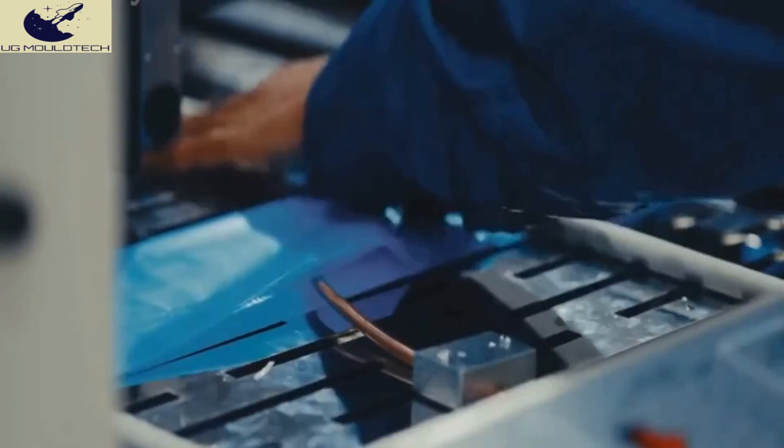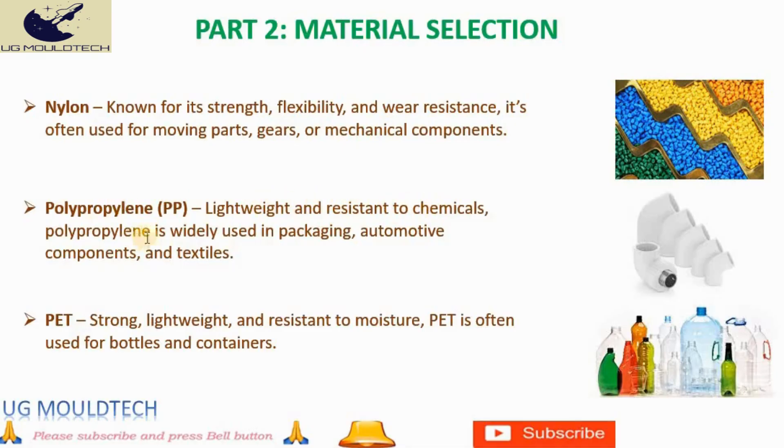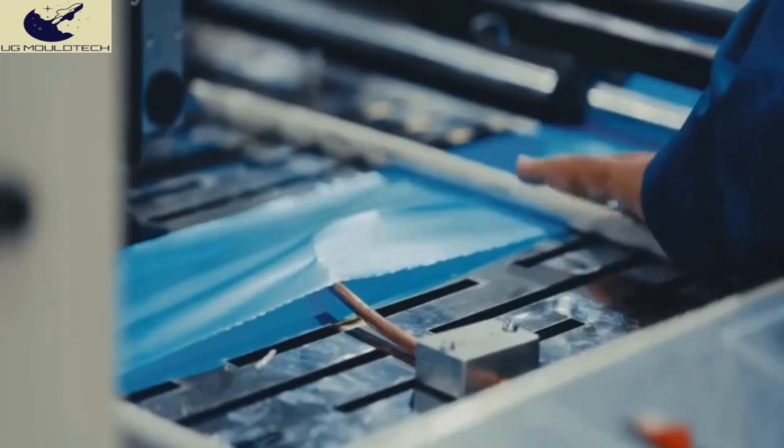Polypropylene: This versatile plastic is lightweight and highly resistant to chemicals, making it ideal for a wide range of applications, including packaging, automotive components, and textiles.